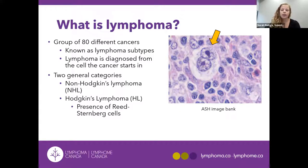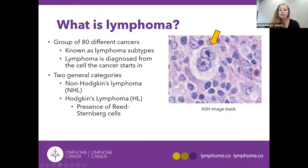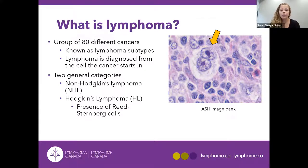The first way lymphoma is categorized generally is by Hodgkin's or non-Hodgkin's lymphoma. When you look at cells from your lymphatic cancer underneath the microscope — usually done by pathologists — they look for the presence of something called the Reed-Sternberg cell. This is a very large cell that usually has more than one nucleus. If this cell is present, it's classified as Hodgkin's lymphoma. If it isn't there, the lymphoma is classified as non-Hodgkin's lymphoma.